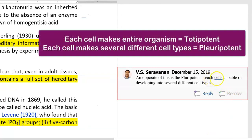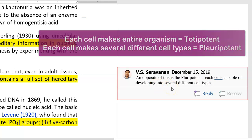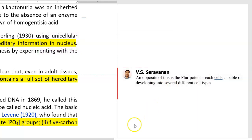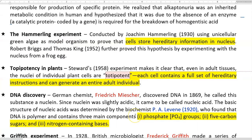There is another term similar to totipotency, which is pluripotency. Pluripotency is the ability of each cell to develop into different or several kinds of cell types.